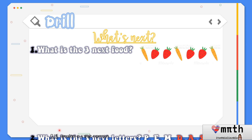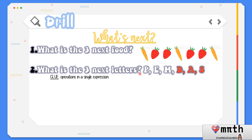For number two, what is the three next letters for P, E, M? We take note on the clue of operations in a single expression. If we remember from elementary, the operations in a single expression pertain to PEMDAS: parenthesis, exponent, multiplication, division, addition, and subtraction. Since we have P, E, M, therefore we are going to follow it by D, A, and S to form PEMDAS.